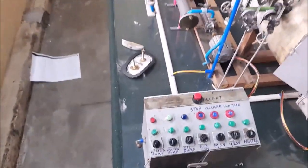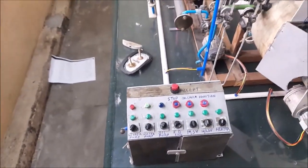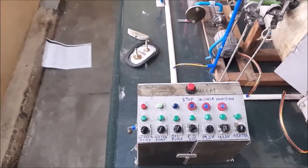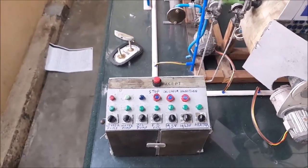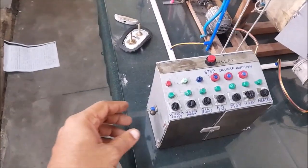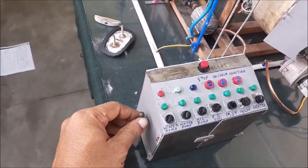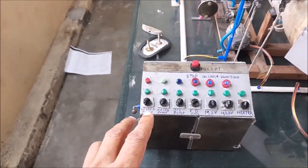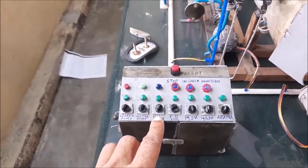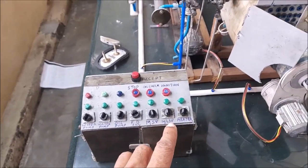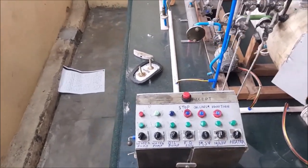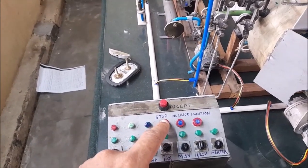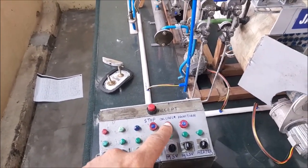And this is the panel board of the boiler. This is an older panel board. This boiler is 27 years old. The new panel board is completely touchscreen. This is the panel board main switch. This is the water pump, oil pump, FDF, and water heater. This is stop, emergency stop, oil check, and ignition.